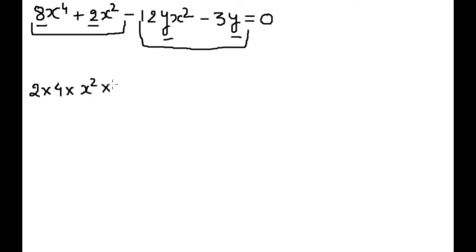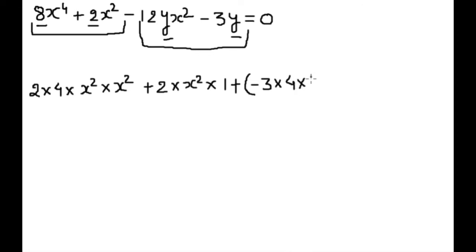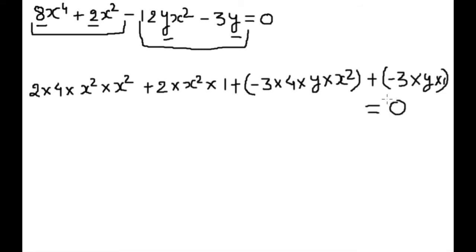Because in exponents, we add both exponents in multiplication. So we have plus 2 into x squared into 1. We can write minus 12 as plus, and in the bracket minus 3 into 4, into y into x squared, and we can write plus minus 3 into y into 1.